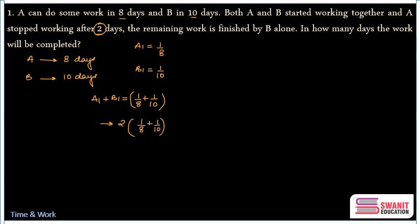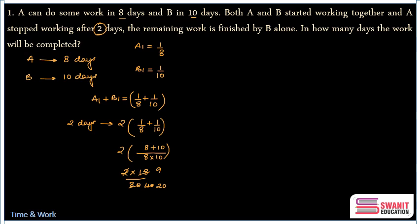Solving further — and remember, don't take LCM; write values as-is in multiplication and addition — it becomes (8 + 10) / (8 × 10), which is 2 × 18 / 80. Cancelling gives 36/80, which simplifies to 9/20. So the work done by them in two days is 9/20, and then A leaves.